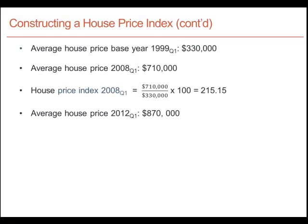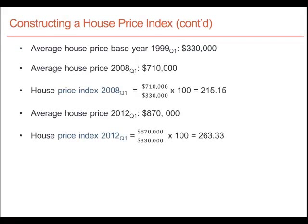We can do the same for any other time period. For example, in 2012 the average price was $870,000. Plugging this into our formula, we take the value in the year in question in the numerator, the base year value in the denominator, divide one into the other, multiply by 100, and the answer is 263.33. This is how we obtained all of the values for the price index in the final column. In 1999 the value is 100, and we can immediately see the amount by which prices have increased or changed relative to the base period.